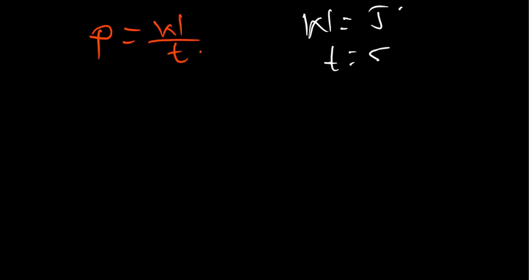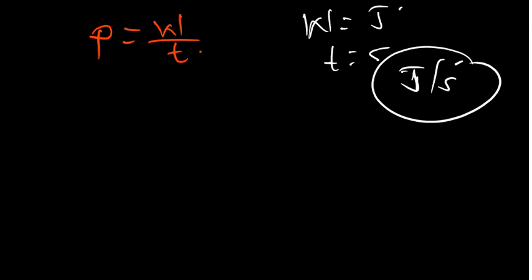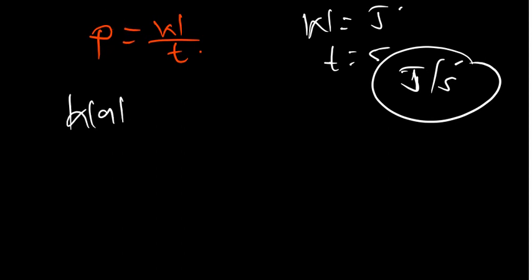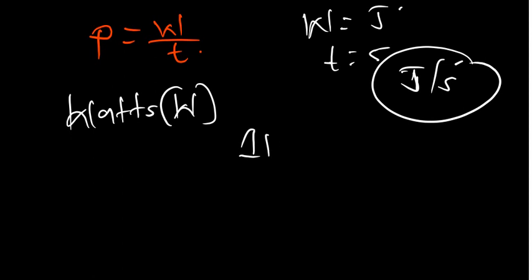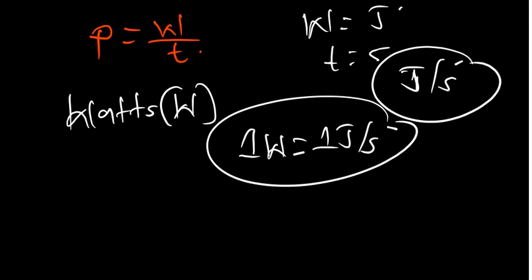This means we can say that the SI unit for power is joules per second. But joules per second is the same as watts, so the SI unit for power is watts, denoted by the symbol W — a capital letter. In one watt there is one joule per second.